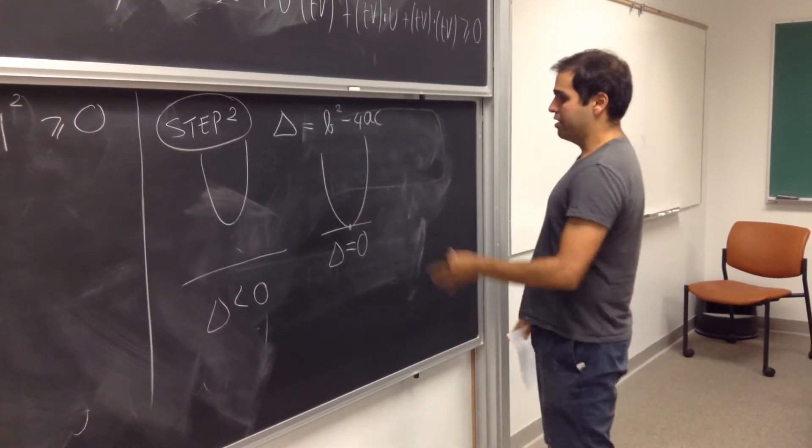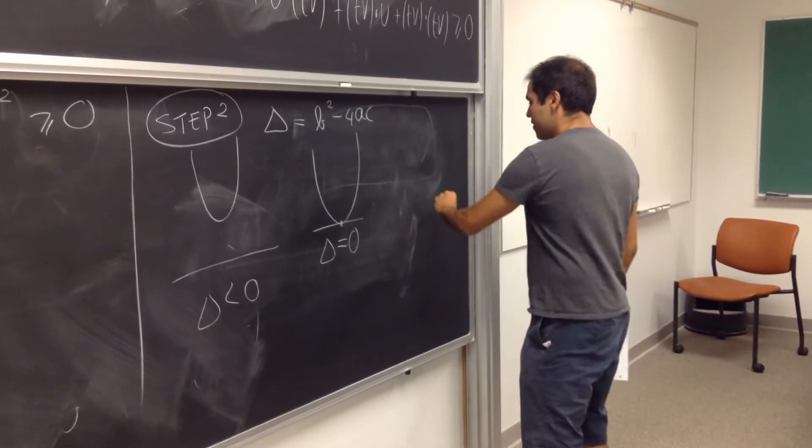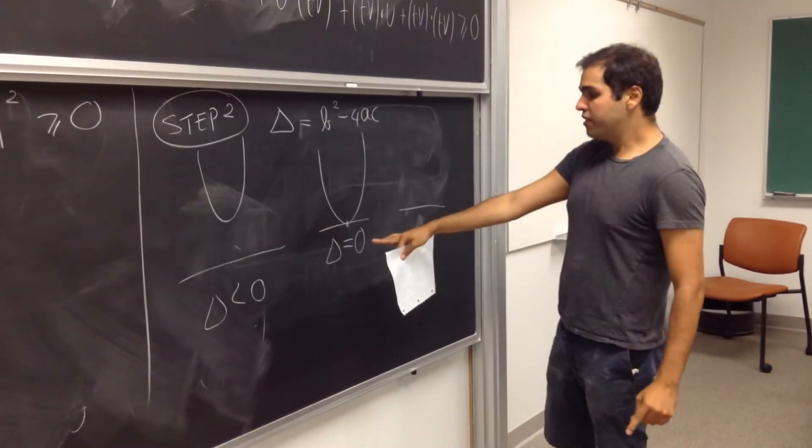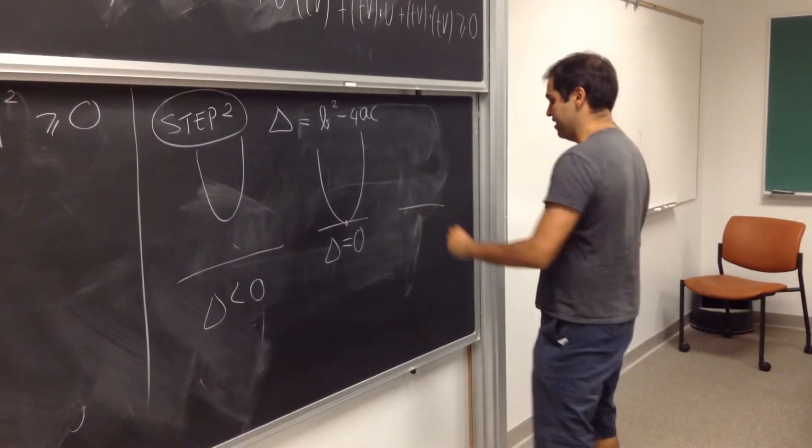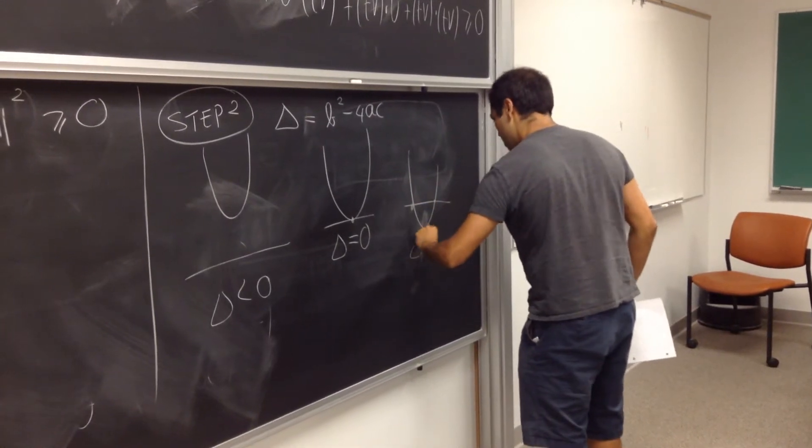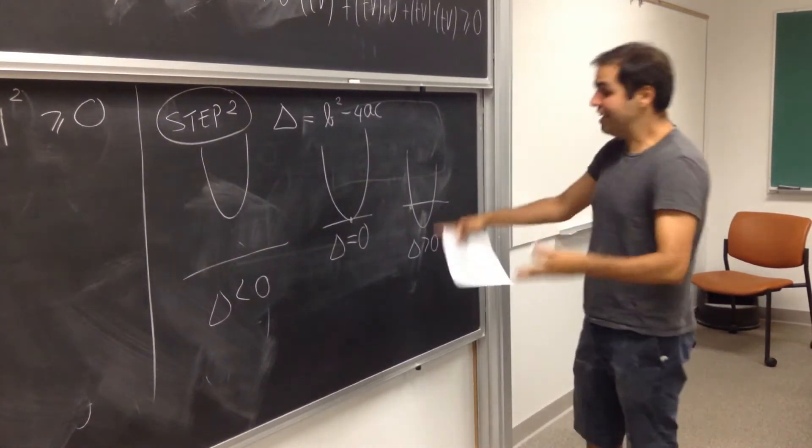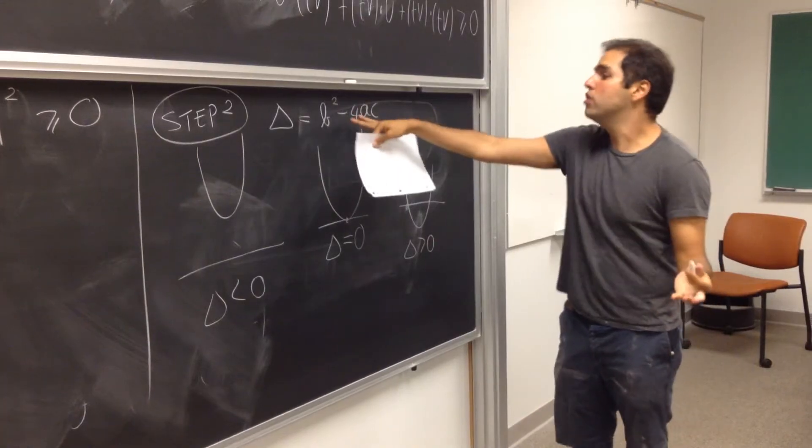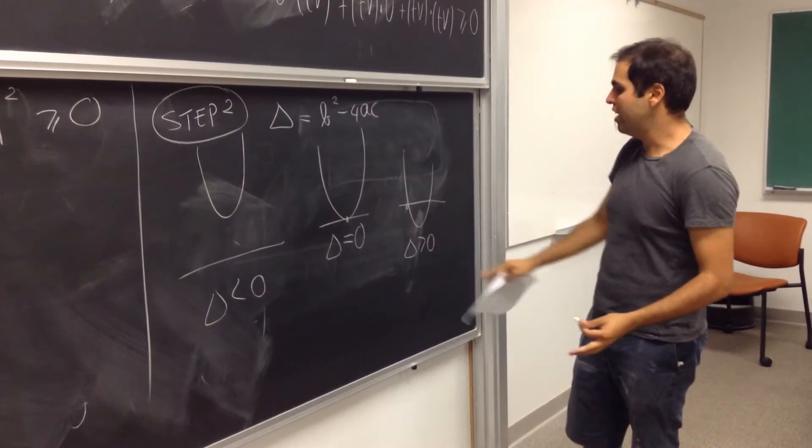But if the discriminant is positive, then it has two roots, right? Minus b plus or minus square root of the discriminant over 2a.